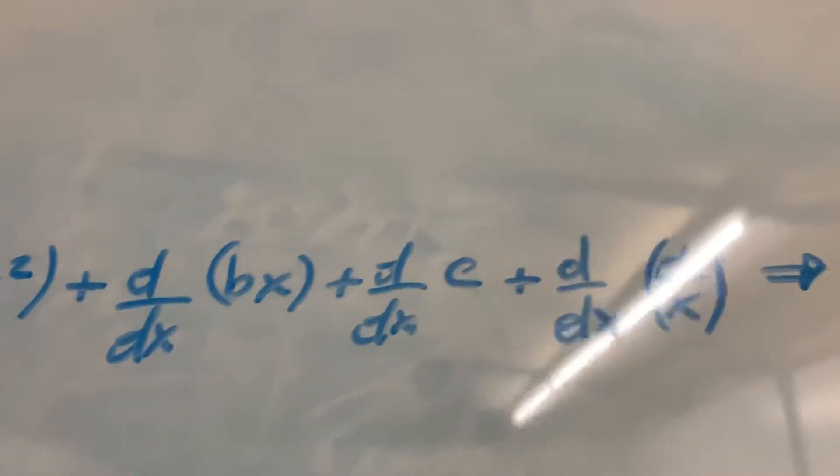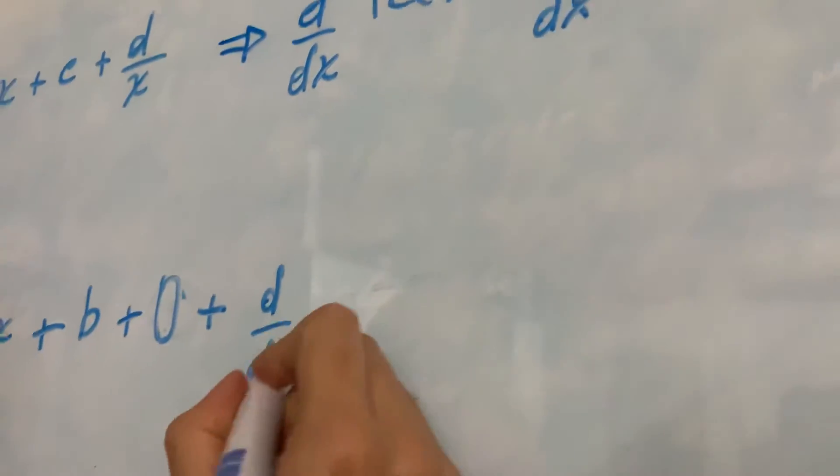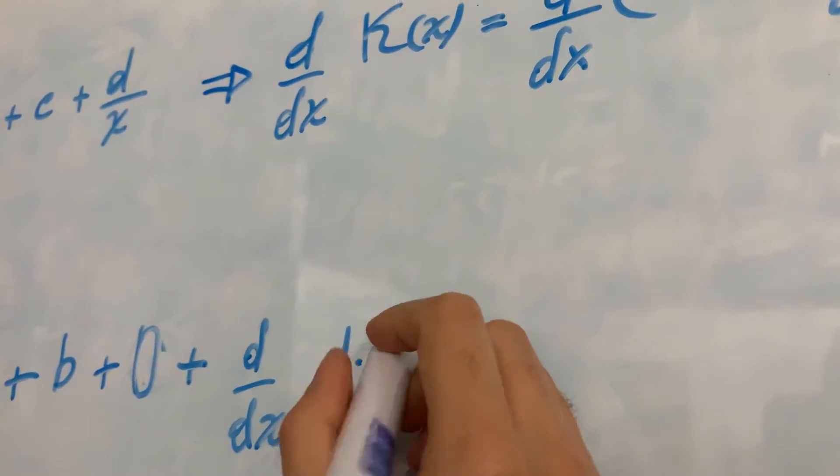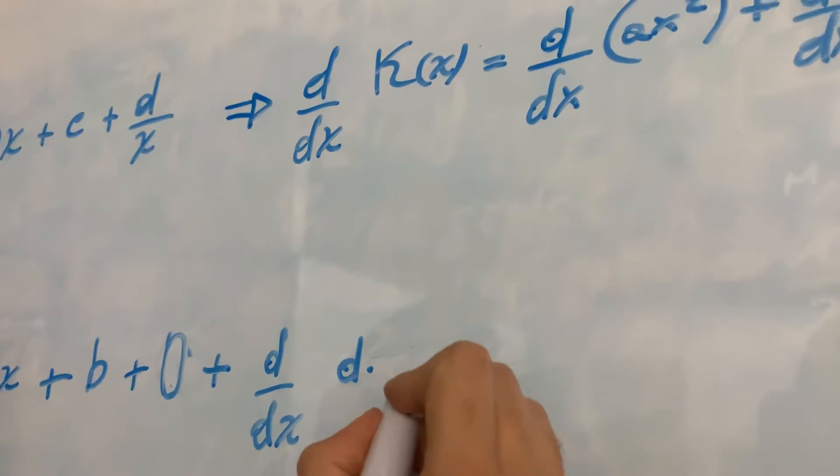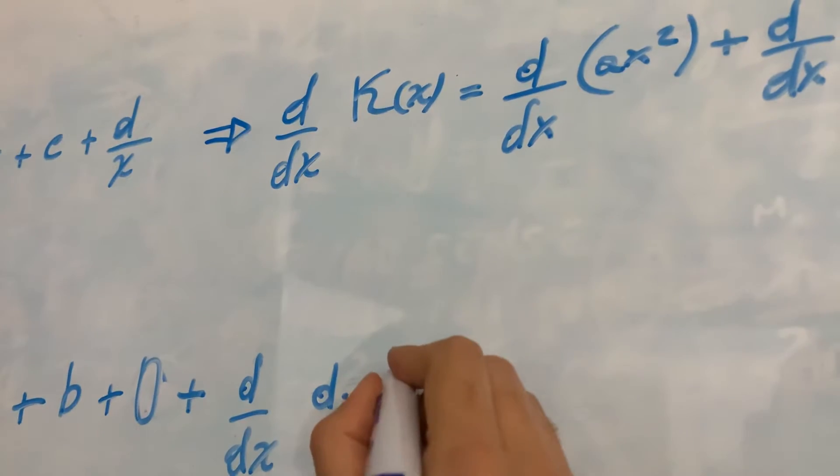Plus, this we can actually write as the derivative from the variable x of the constant d that multiplies 1 divided by x. But 1 divided by x we can write as x to the power of minus 1.